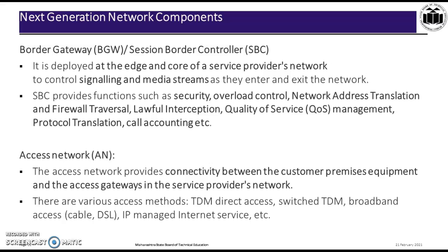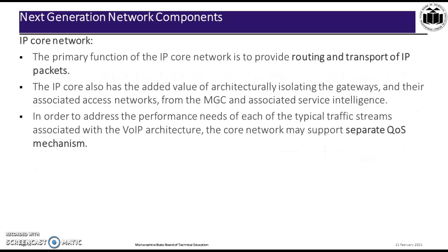The Access Network provides the connectivity between the customer devices and the access gateways in the service provider network. Various access methods include TDM (Time Division Multiplexing), direct access, switched TDM, broadband access including cable or digital subscriber line, and IP managed internet services. The primary function of the IP Core Network is to provide the routing and transport of IP packets. It also architecturally isolates the gateways from the Media Gateway Controller, and may support separate quality of service mechanisms.